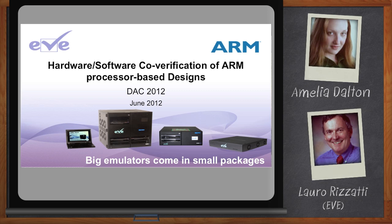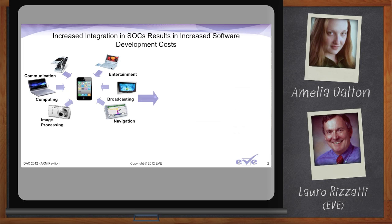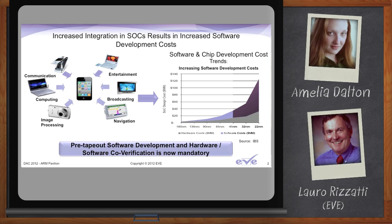In today's SoC embedded design process, there are a lot of factors that make the verification task increasingly difficult. There are two major trends highlighted on the right with a chart. The chart maps the cost of designing an embedded SoC that includes hardware and embedded software as a function of node technology. The slide clearly indicates that there is an inflection point between 45 and 32 nanometers, where the cost is steeply rising and getting out of control.